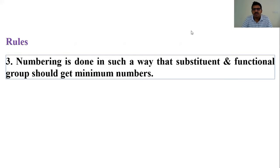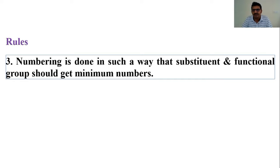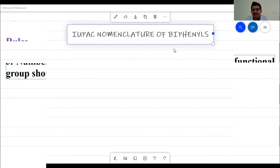The next rule: you have to give numbering in such a way that substituents and functional groups get the minimum number. If any substituent or alkyl group is present on any benzene ring, the carbon bearing that functional group should get the minimum number. These are the rules, and based on these rules we will look at some examples.